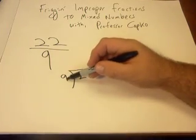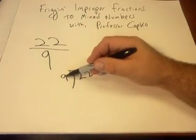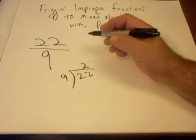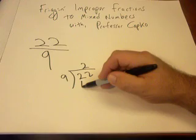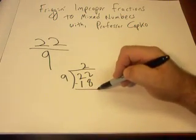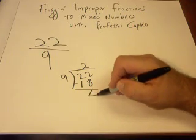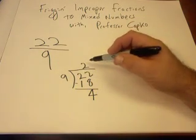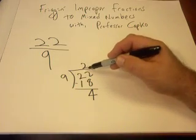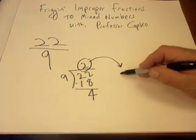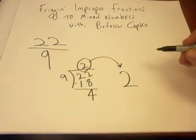So with old-school division, 9 doesn't go into 2 equally, but 9 goes into 22. Well, 2 times is the biggest it'll go into it. So 2 times 9 is 18. I subtract 18 from 22, and I'm left with 4 remainder. We're going to take those remainders and work with that. So 9 went into 22 two times. This number up here is going to be my whole number, 2.